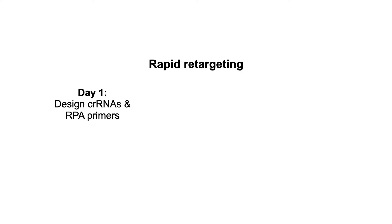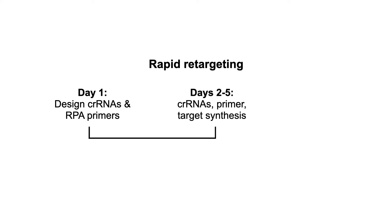On the first day, we design a set of new sequences — CRISPR RNAs and primers — in order to detect that new sequence we're trying to find. It then takes a couple of days for a company to make those sequences and ship them to us; that's actually the slow part of the process. In this particular example, on the sixth day we were able to do testing and verify that our design worked.